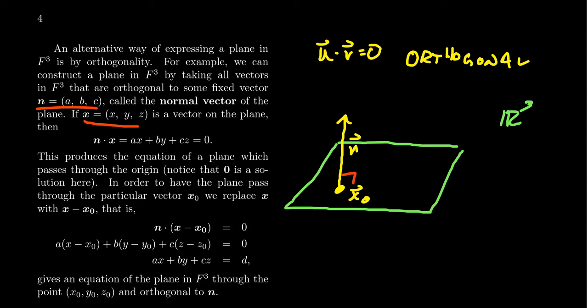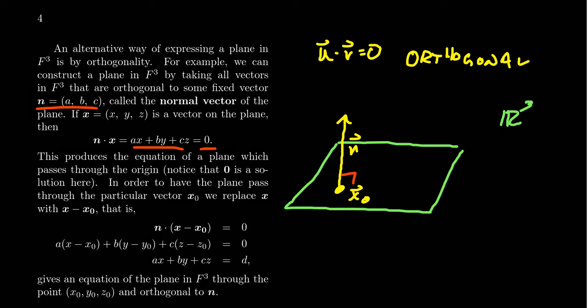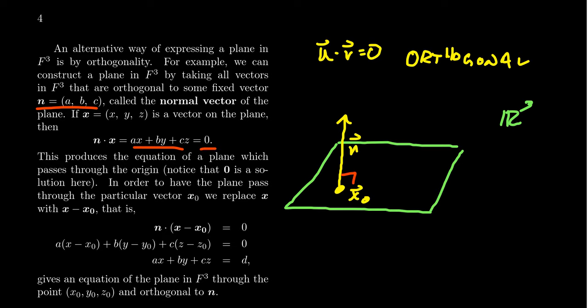If we take a generic vector on the plane, let's just say it's x here (x, y, z), then we want that the dot product of n and x, the normal vector with the vector x, which in expanded form would look like ax + by + cz, we want that to equal zero. This produces an equation for that plane.